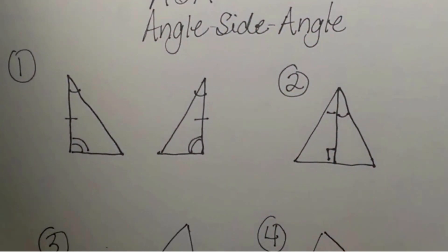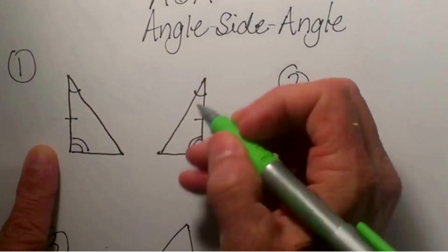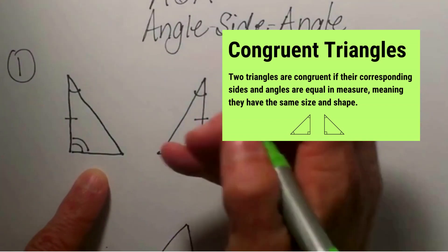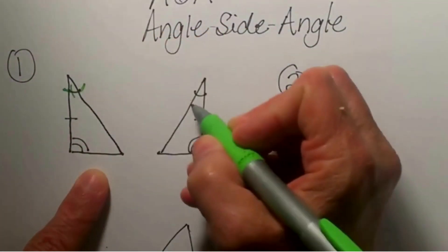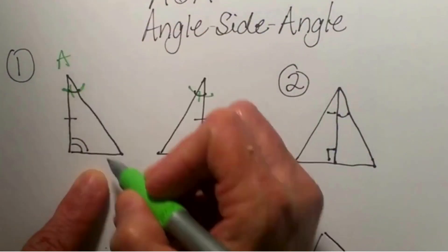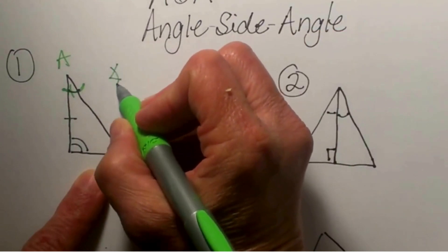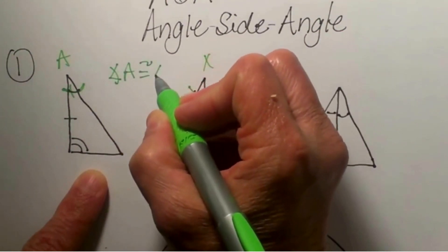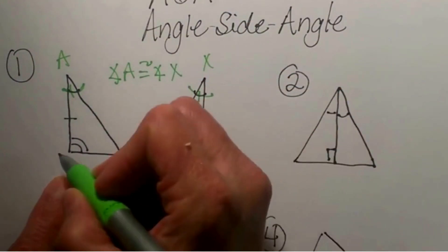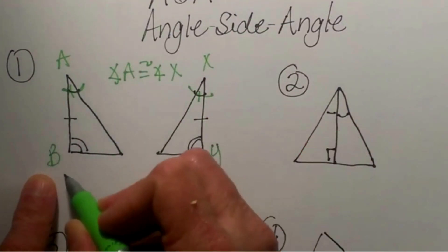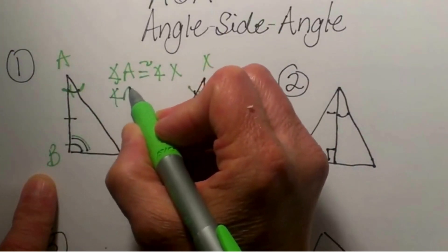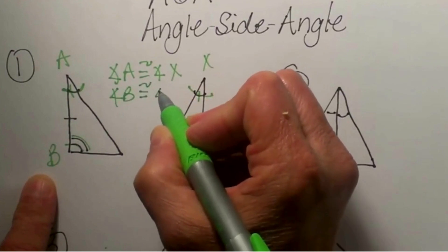This first one is very obvious. We have two triangles that could be congruent to each other, but what we are looking for are markings. Notice this angle has one little arc and this angle has one little arc, so they are corresponding angles. Let's call that angle A and angle X — they correspond and are congruent. Then we have two angles down here: angle B and angle Y, which have two arcs, therefore angle B is congruent to angle Y.